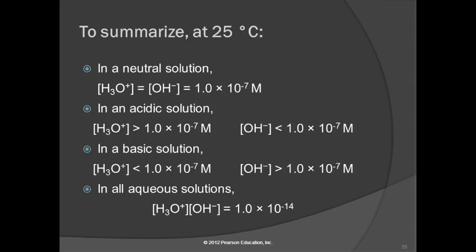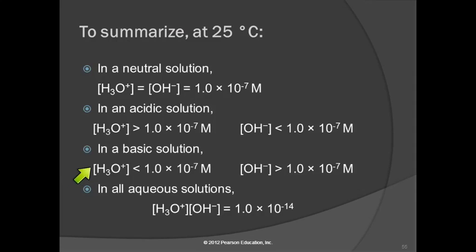We define a solution as acidic or basic based on the relative concentrations of hydronium ion and hydroxide ion. When they're equal, the solution is neutral. For an acidic solution, there's more hydronium ion — the hydronium ion concentration is larger than 10 to the minus 7, and the hydroxide ion concentration must be less, since both multiplied together must always equal 10 to the minus 14. A basic solution has a lower hydronium ion concentration and a greater hydroxide ion concentration. Any aqueous solution will have [H3O+] times [OH-] equal to 10 to the minus 14.